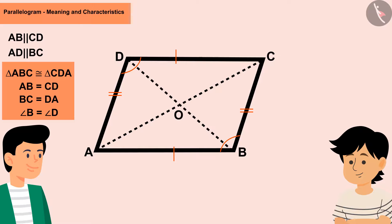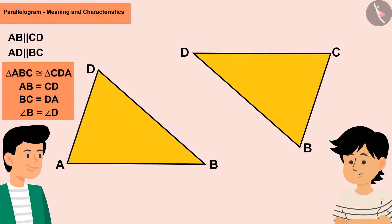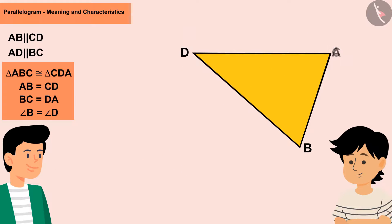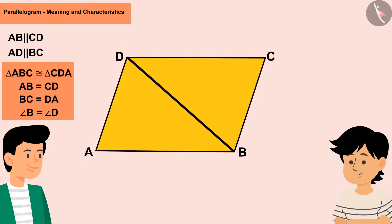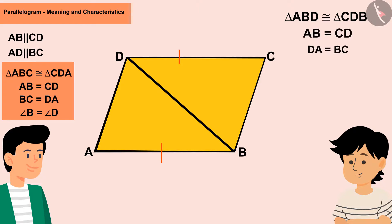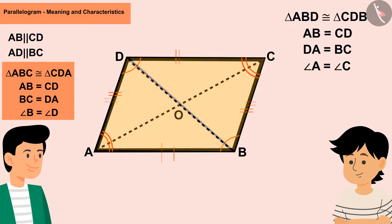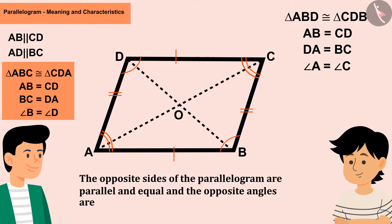Cutting along diagonal BD gives triangles ABD and BCD — these are also mutually congruent, confirming that sides AB = CD and DA = BC. Therefore, the opposite sides of a parallelogram are parallel and equal, and the opposite angles are of equal measure.